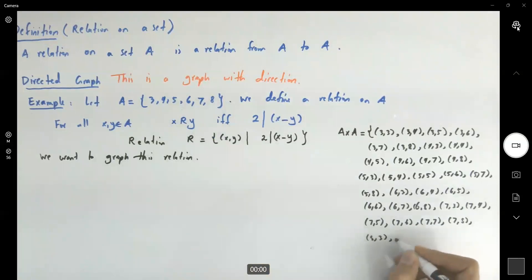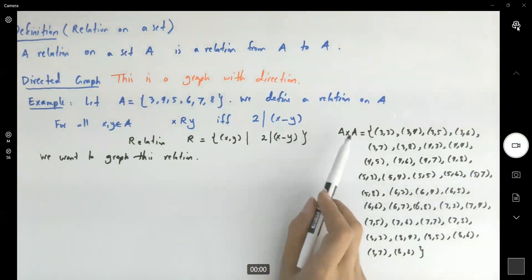And finally we're down to 8: 8,3, 8,4, 8,5, 8,6, 8,7, 8 and 8. So this is the Cartesian product between A and A. Now, what is R?